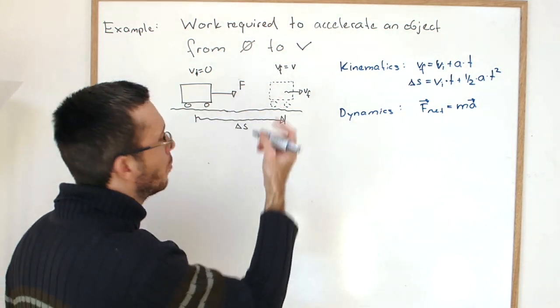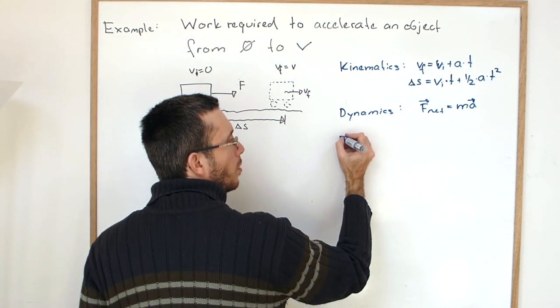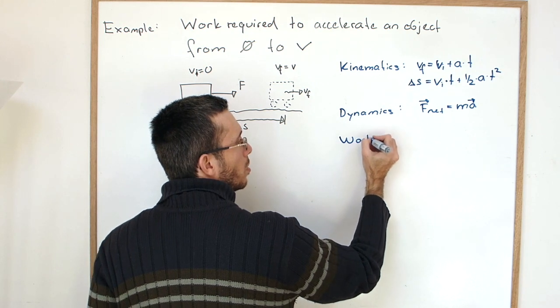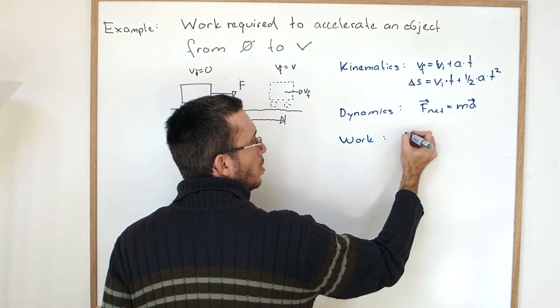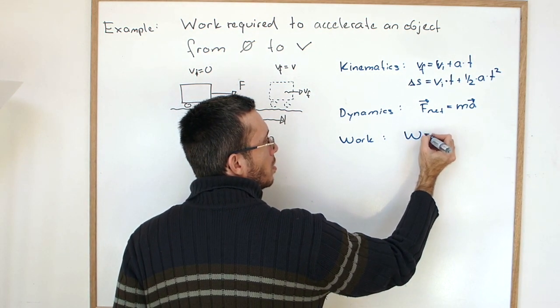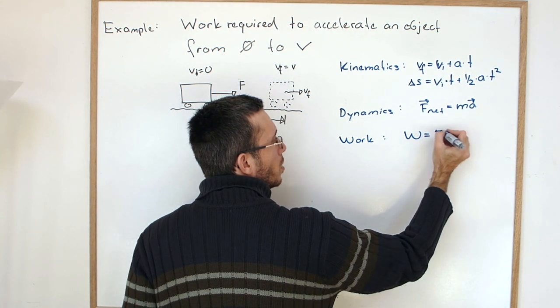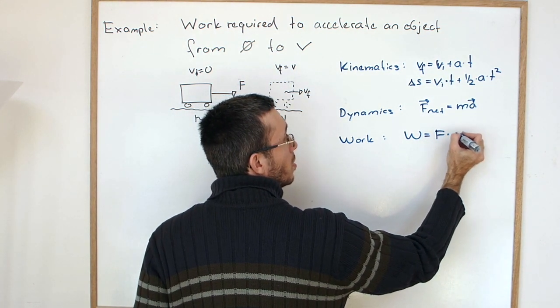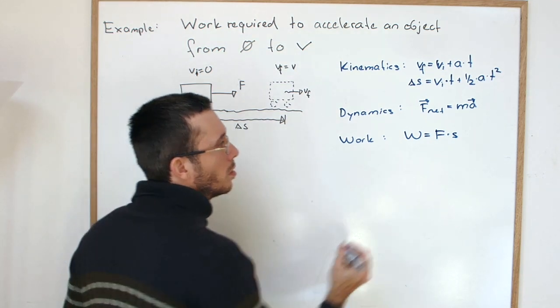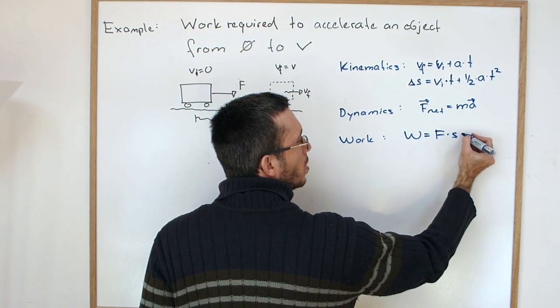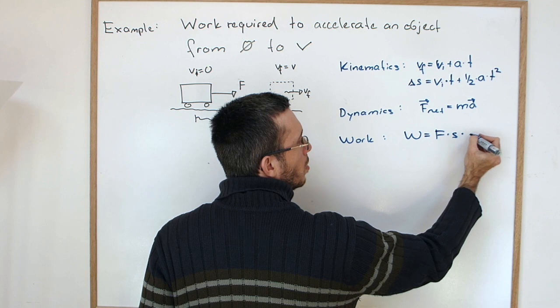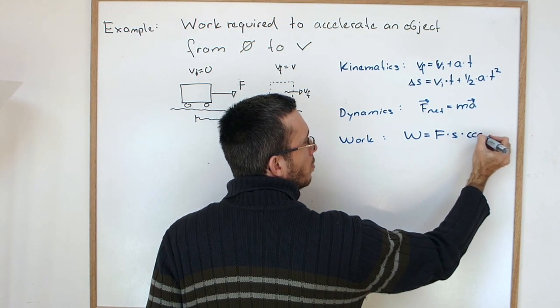And finally, from the energy chapter, we have that the mechanical work is force times the displacement times the cosine of the angle.